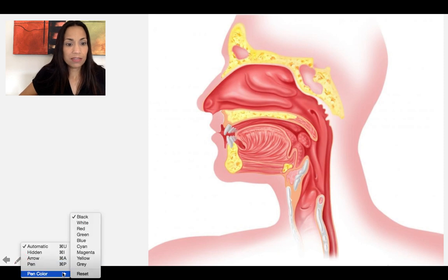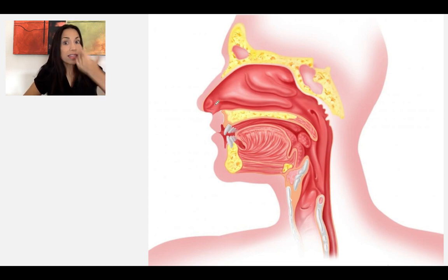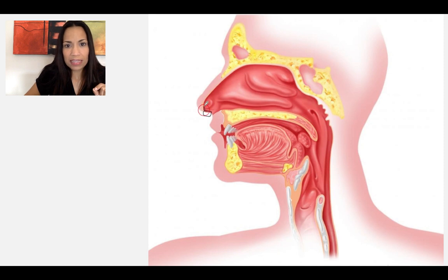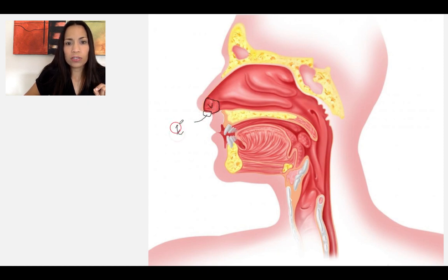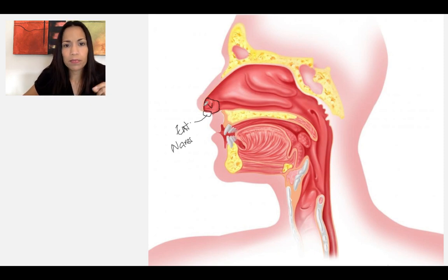Now let's describe the inside of the nasal cavity. We've described the external skeleton and the paranasal sinuses, so now let's go inside through the external nares. The first thing we find is a reception area called the vestibule, where we have sebaceous glands, sweat glands, and hairs that help trap large dust particles.